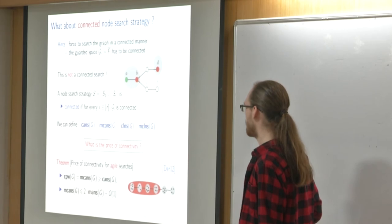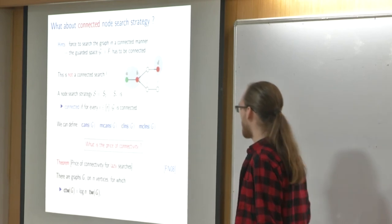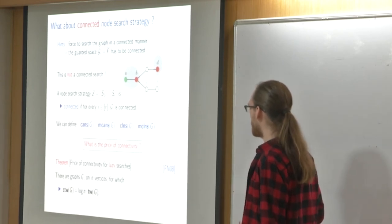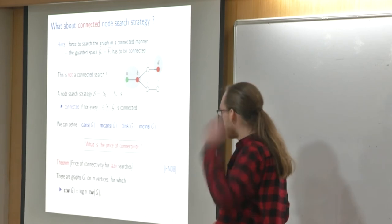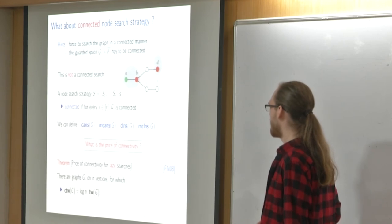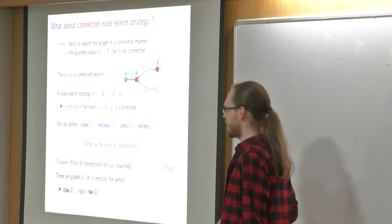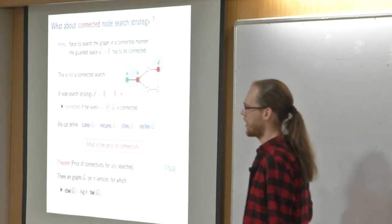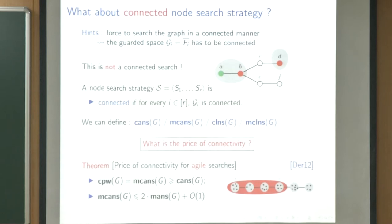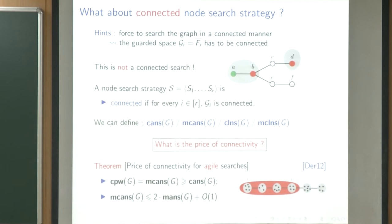It was also proven that connected pathwidth equals the monotone connected agile node search number, and that multiplying the monotone agile node search number by two gives the monotone connected agile node search number. So it fits nicely between these parameters. In contrast, for treewidth, there is a prior result showing that connected treewidth can be far from treewidth — there can be a logarithmic factor between them.